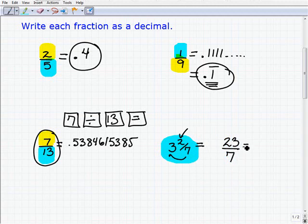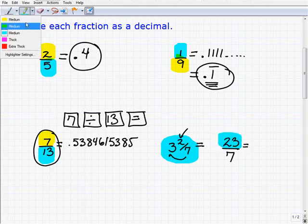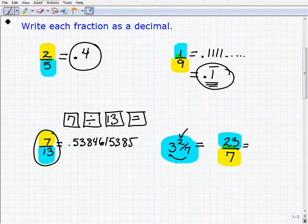This is, I think, the easiest way to write a mixed number as a decimal. So the first thing you want to do is turn it into an improper fraction. And now let's just go ahead and do what we were doing before, and that was to take the numerator and divide it by the denominator. So 23 divided by 7.